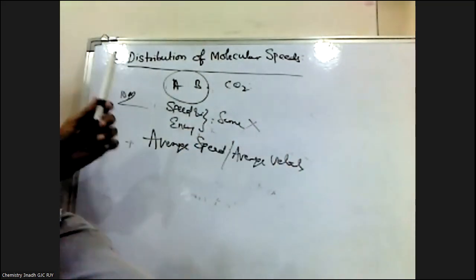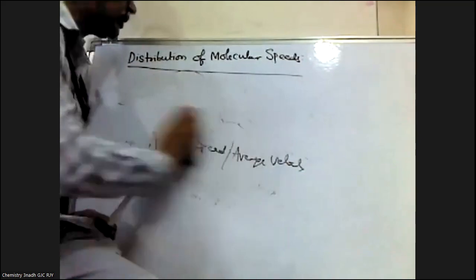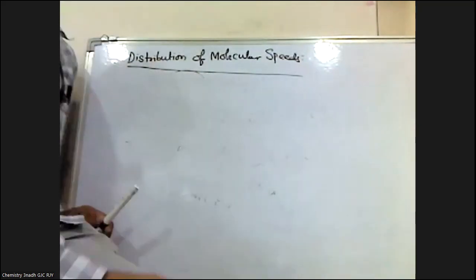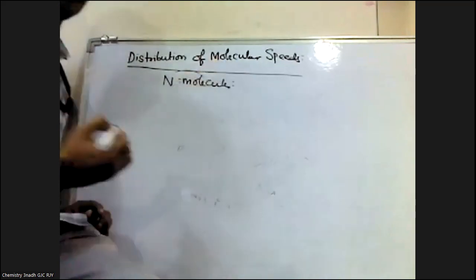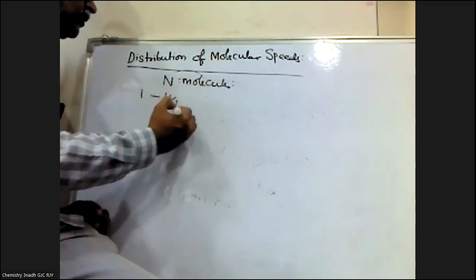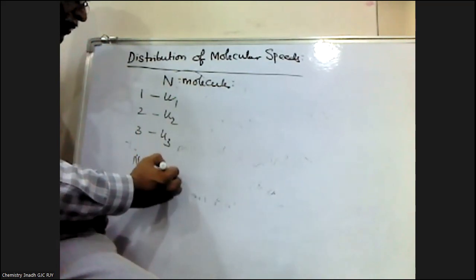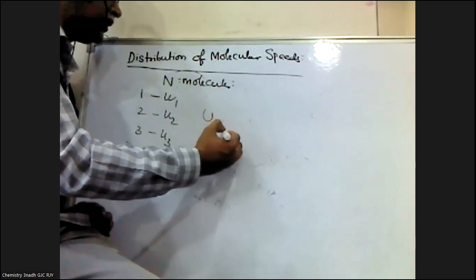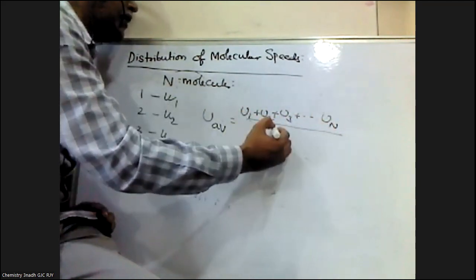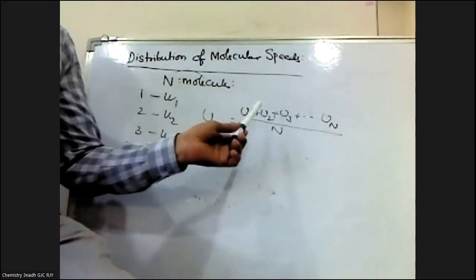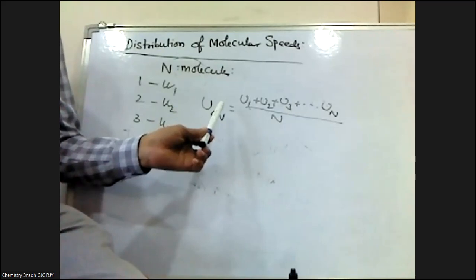So we can obtain only the average value of the speed of the molecules. Suppose there are n molecules in a gas — molecule one is moving with velocity u1, two with u2, three with u3, and so on, up to the nth molecule moving with velocity un. Then the average velocity is given by: u_average = (u1 + u2 + u3 + ... + un) / n.